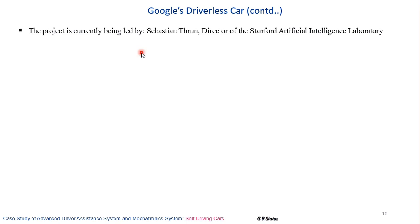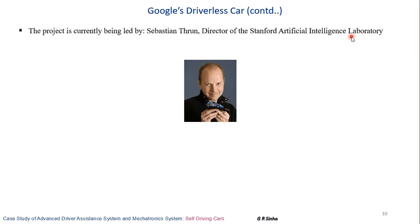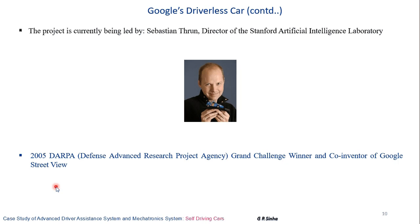The Google driverless car project is currently led by Sebastian Thrun, Director of Stanford Artificial Intelligence Laboratory. He is a 2005 DARPA Grand Challenge winner — not a simple task — and has also been co-inventor of Google Street View.